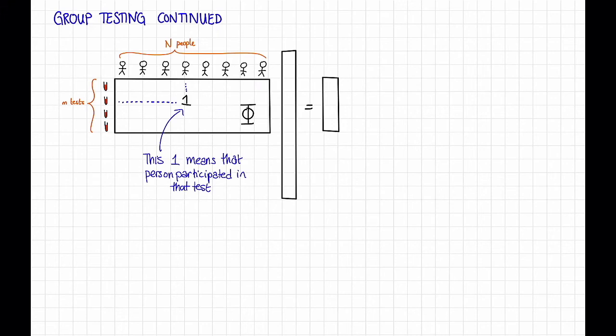So for each person who's sick, say that one's sick and that one's sick, I'm going to put a 1 in the corresponding spot in this vector. So I get some sparse vector that looks like this.